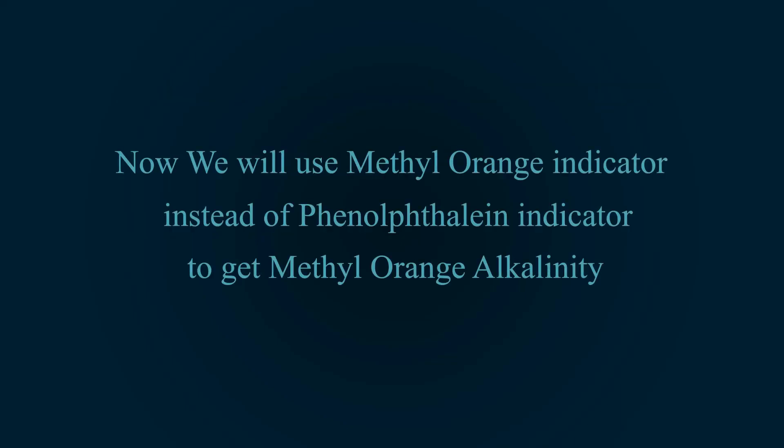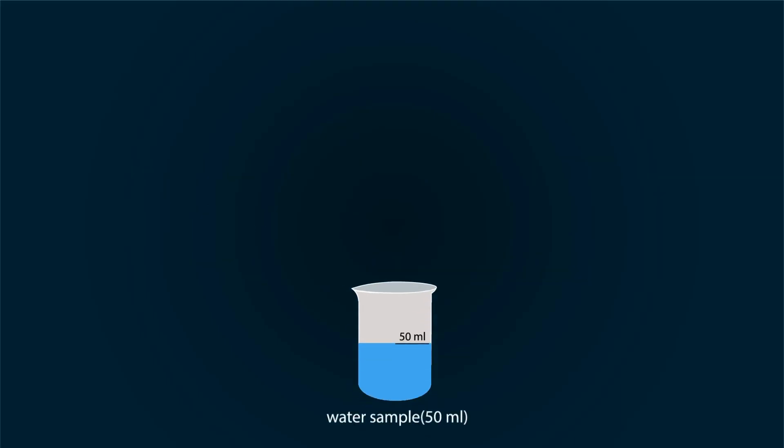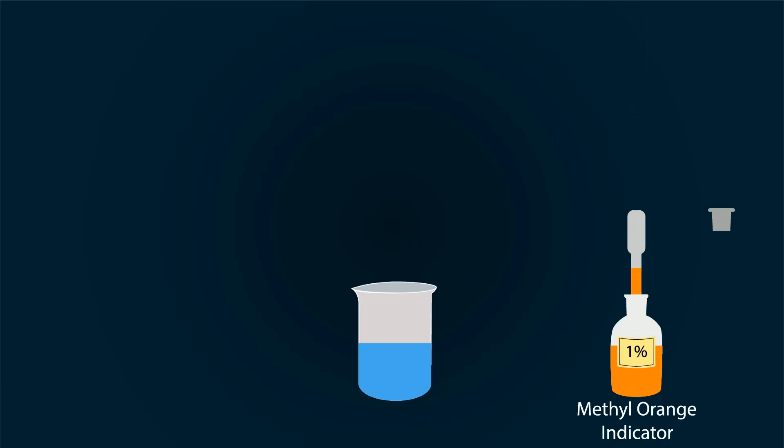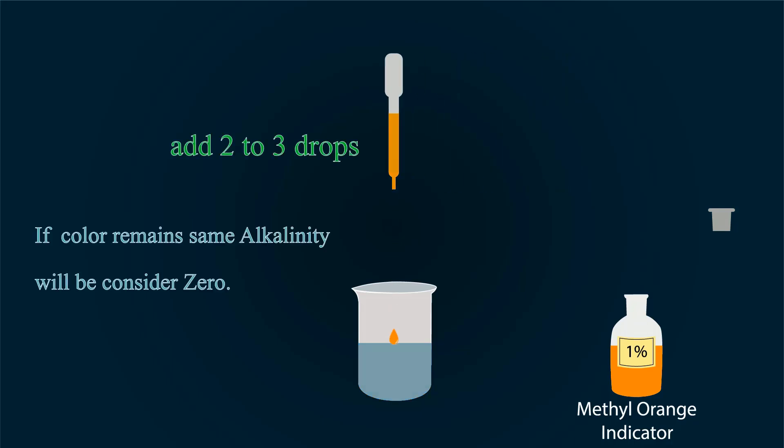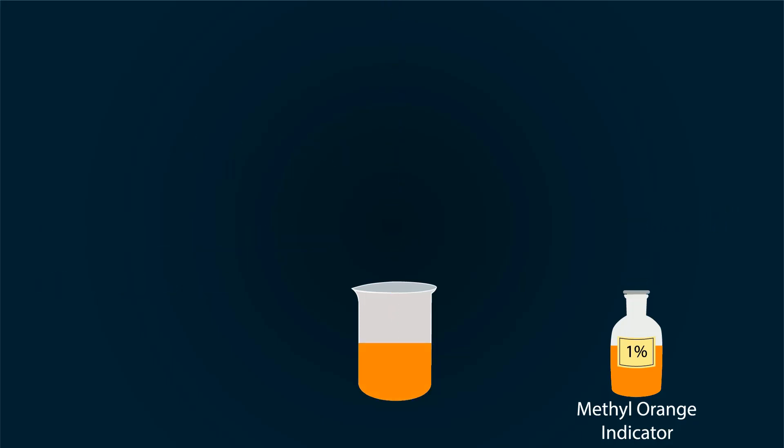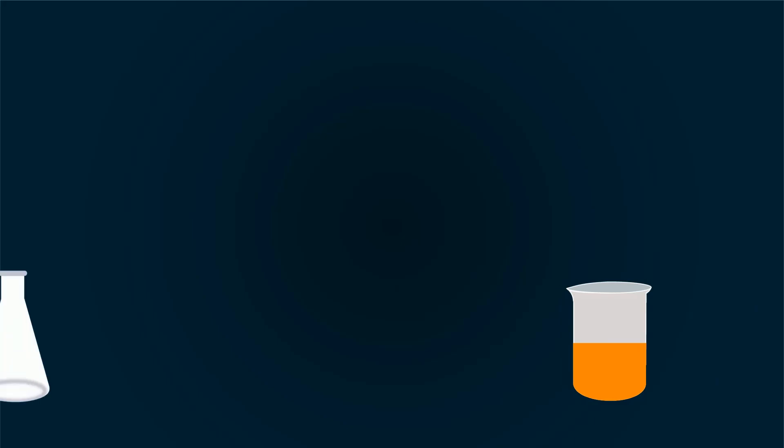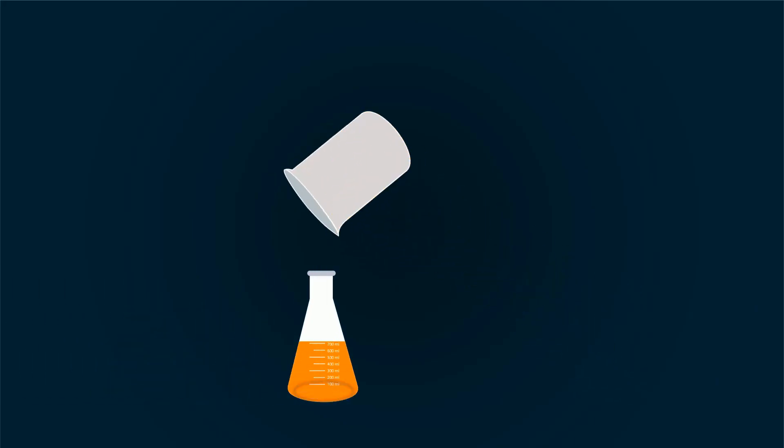Now it's time for methyl orange indicator for methyl orange alkalinity. Take 50 ml water sample and add 1% methyl orange indicator into it. 2 to 3 drops would be enough, and our water color will turn into green. If the color does not change, that means our alkalinity in this water is 0. Put this water into the conical flask.